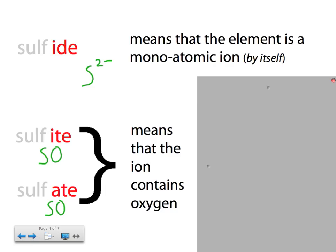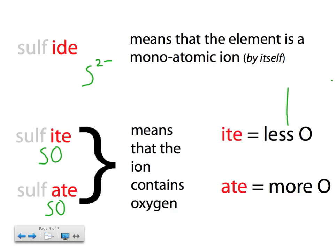So, '-ite' and '-ate' means that the ion contains oxygen. Now, the annoying thing is it doesn't tell you how many oxygens.